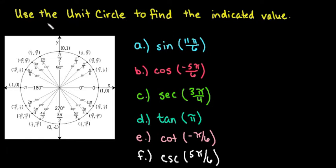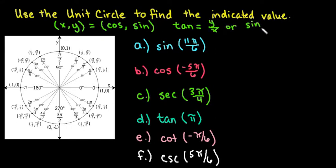A couple things to remember is that our ordered pairs for all of the points on the unit circle are always in the form x comma y, and as far as trig functions go that means that it's cosine comma sine. So the cosine is always the x value, the sine is always the y value, and tangent is always equal to y over x, or we could say that this is sine over cosine.